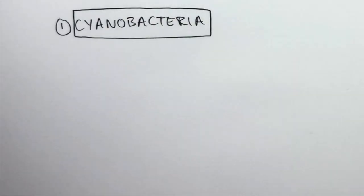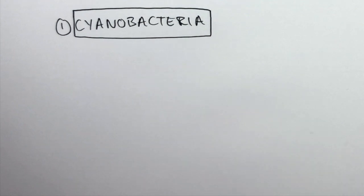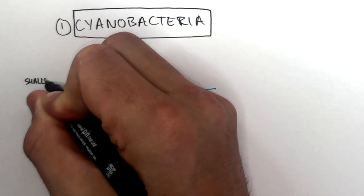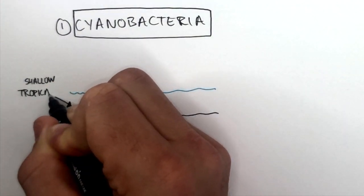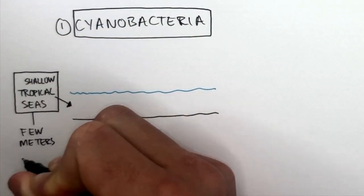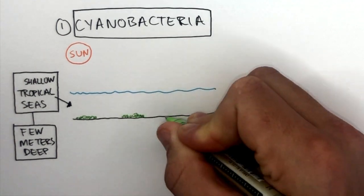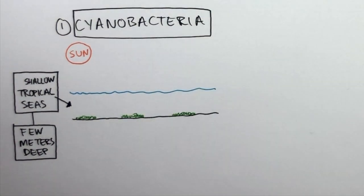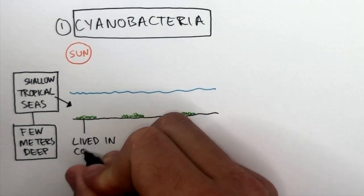Cyanobacteria were the first microorganisms to photosynthesize. They appeared around 3.8 billion years ago, and they lived in shallow tropical seas, only a few meters deep. You would find cyanobacteria on the seabeds, where they lived in colonies.